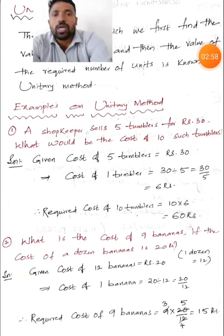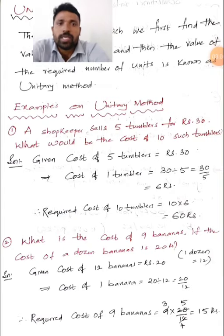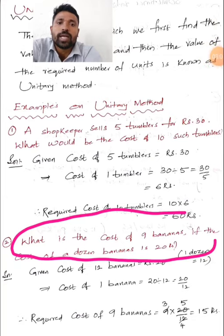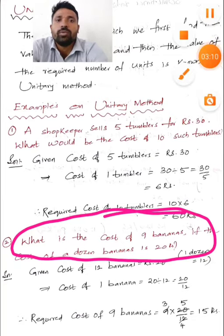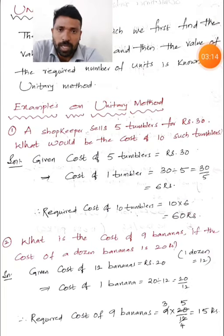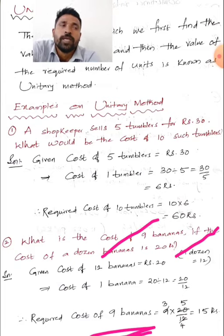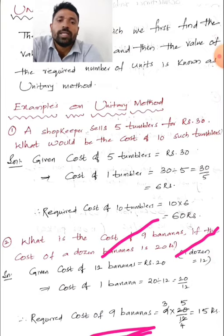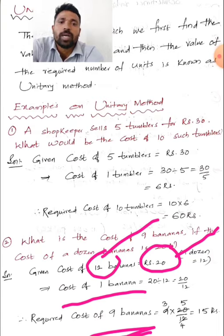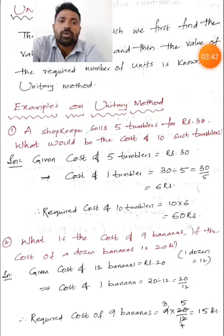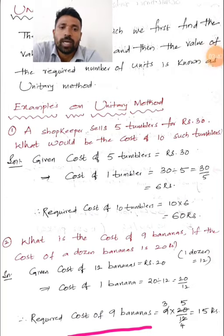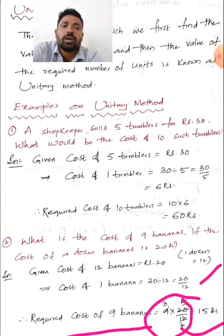Let us solve one more question. What is the cost of 9 bananas if the cost of a dozen bananas is 20 rupees? Since 1 dozen = 12, cost of 12 bananas = 20 rupees. Using the unitary method, cost of 1 banana = 20 ÷ 12 = 20/12 rupees. Cost of 9 bananas = 9 × (20/12) = 15 rupees.